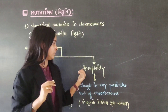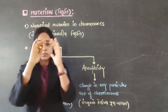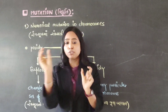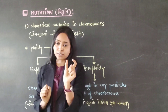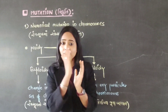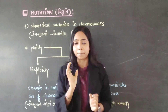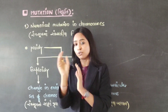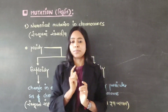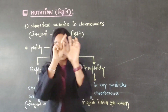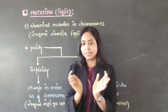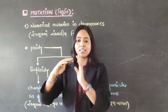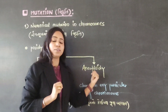In the case of Aneuploidy, within the entire set of chromosomes, if we talk about each individual pair, if there is an alteration or change in any single chromosome of a single set, then we call it Aneuploidy. If one chromosome or two chromosomes are added or removed from the total number of chromosomes in a particular set, then we call it Aneuploidy.